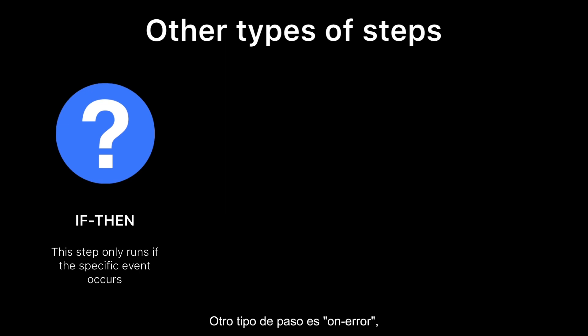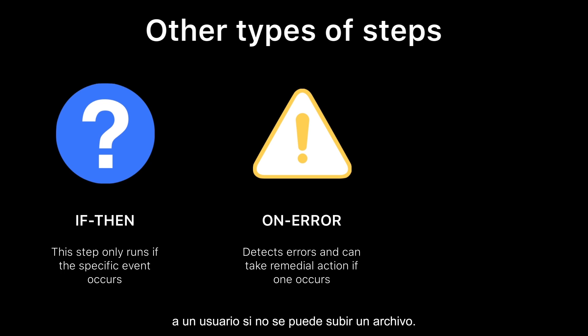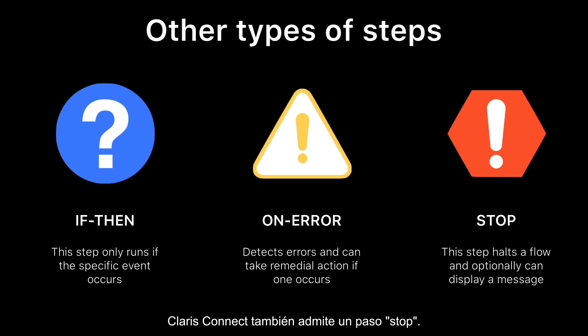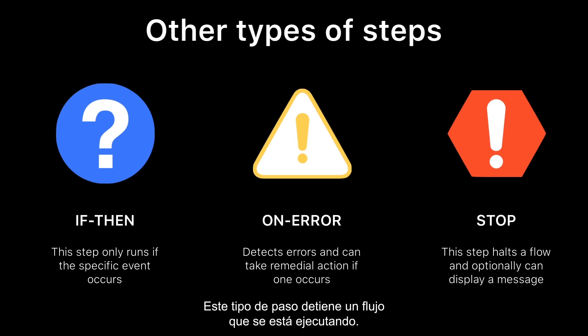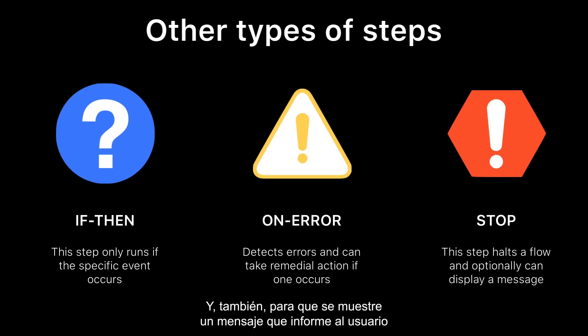Another type of step is an on-error step, which detects errors and can take action if one occurs, like being able to send an email notification to a user if a file fails to upload. Claris Connect also supports a stop step. A stop step halts a flow that is currently running. You might consider using a stop step in conjunction with an on-error step so your flows stop running if an error is encountered and, optionally, display a message informing the user that the flow was stopped.